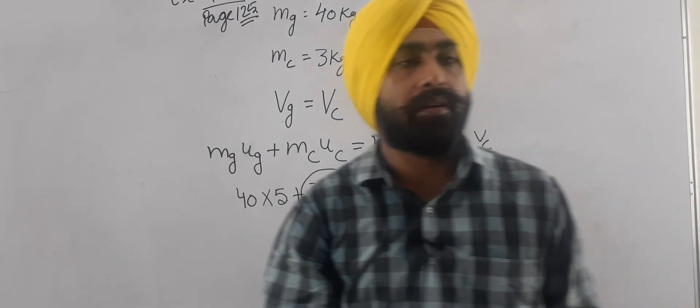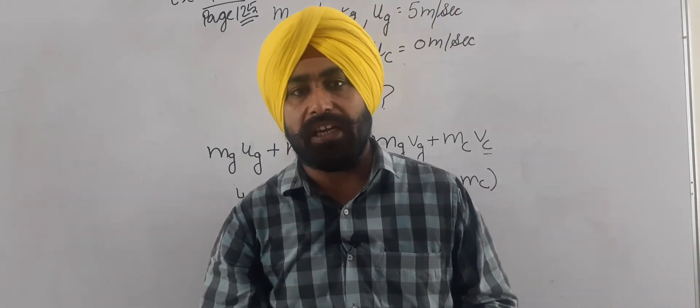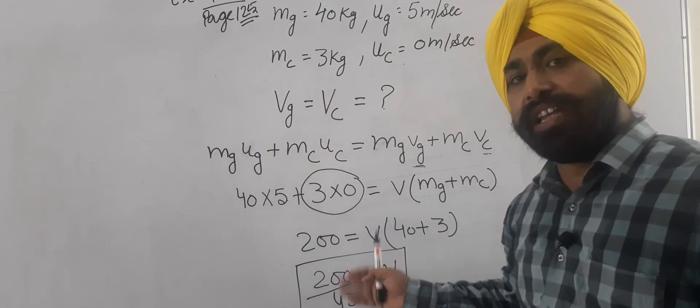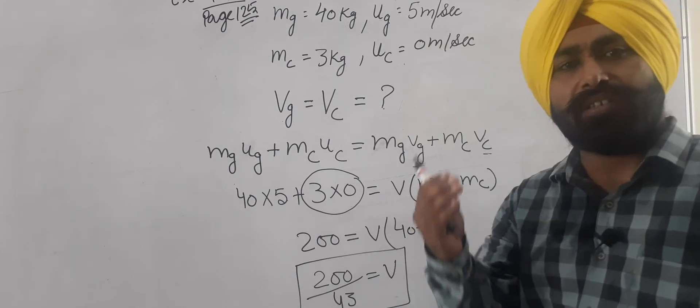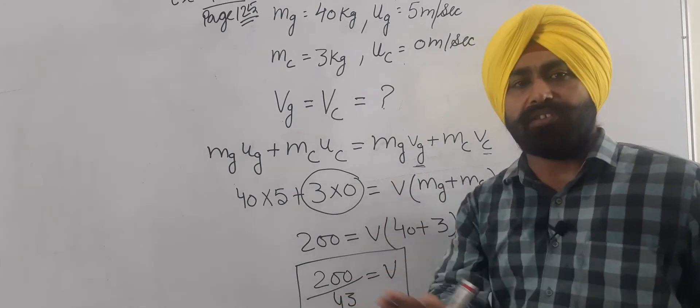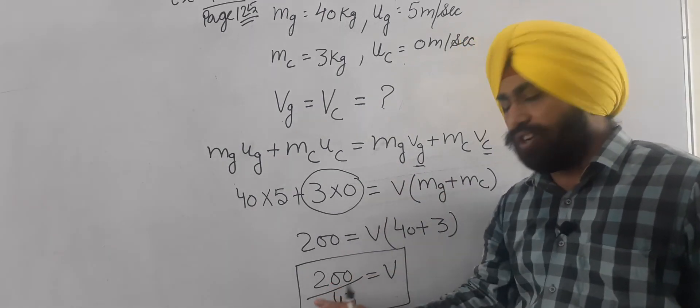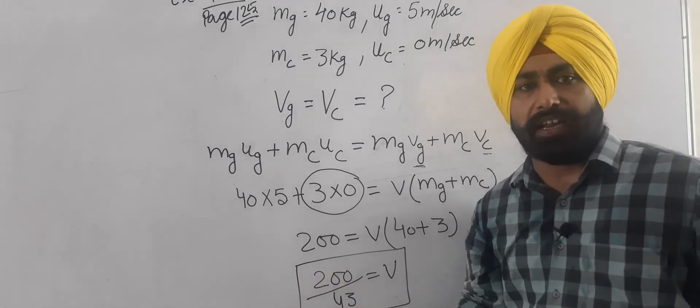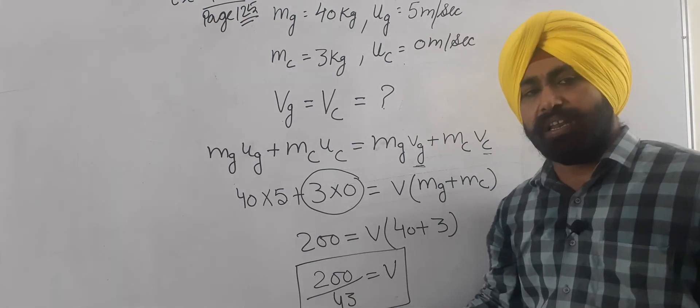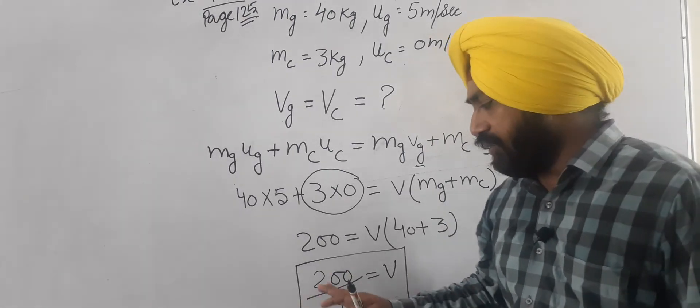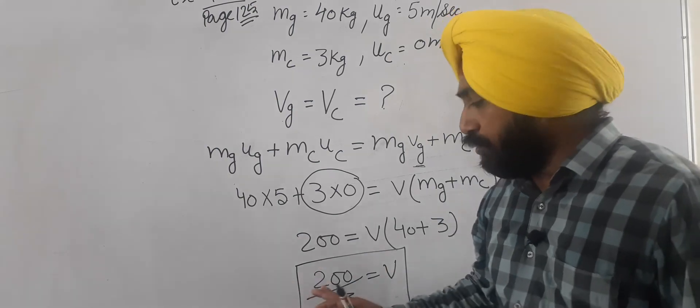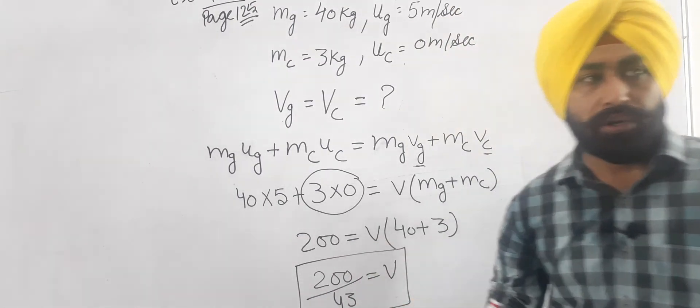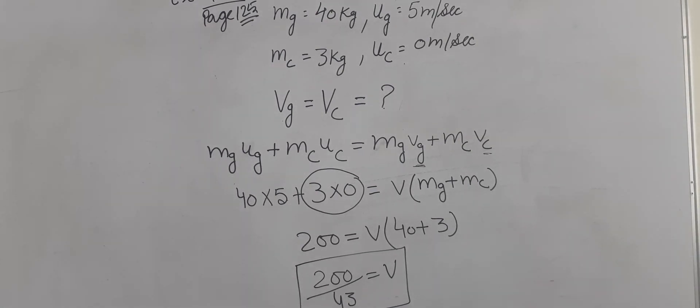And one more thing, some students repeatedly ask this question that the given answer at last, should we do it in fraction or solve it? It's totally based on your convenience. First of all try to solve the fraction, bring the value in decimal form. If you don't have time, then you can leave it in fraction form. Second thing, you must write the units, no unit should be left out. Keep this in mind.